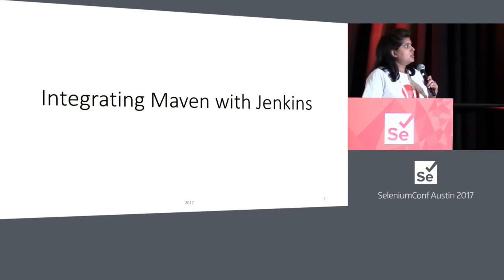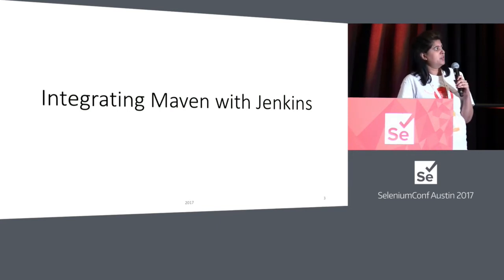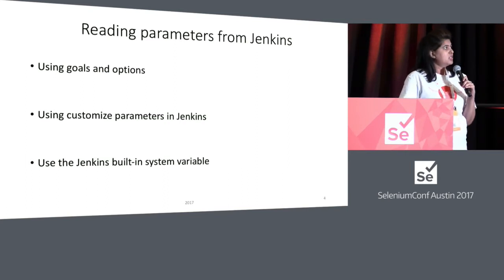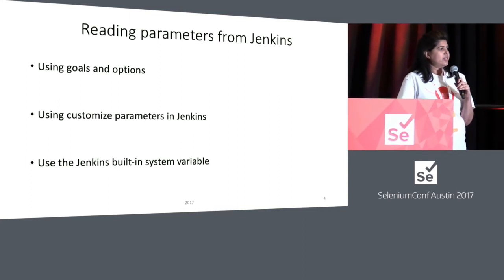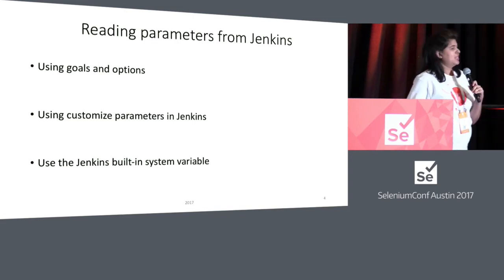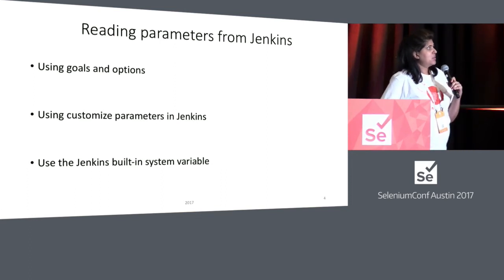I'm going to talk about how I integrated Maven with Jenkins. I'm sure a lot of people using an automation framework with Maven and Jenkins probably know this, but I just want to give my take on how I used it. I believe there are multiple ways where you can set parameters in Jenkins to run or kick off your job. The first one is using goals and options, the second is using a customized parameter — which I learned the hard way — and the last one is using Jenkins built-in system variables.